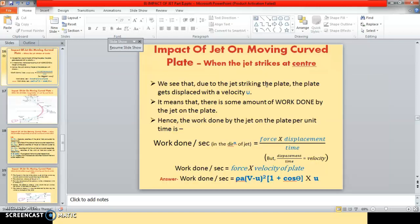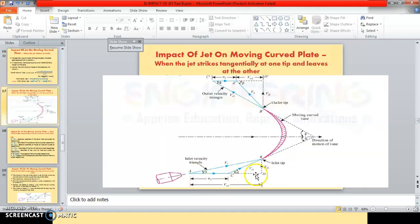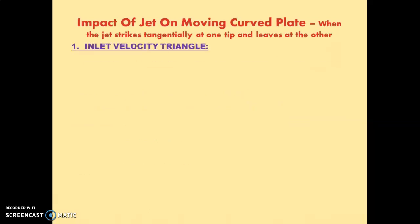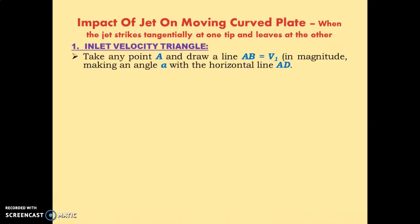Now, triangle ABD is the velocity triangle at inlet and B'C'D' is the velocity triangle at the outlet. To draw the inlet velocity triangle, take any point A and draw a line AB equal to V1. This line represents V1 in magnitude. V1 is the absolute velocity of the jet, so this line represents the direction of the jet coming out of the pipe.